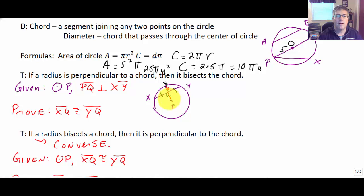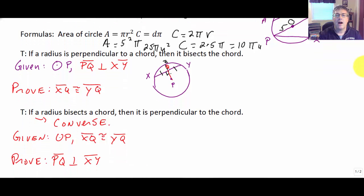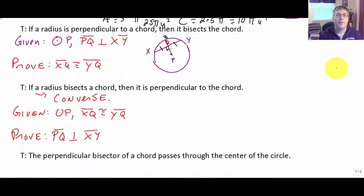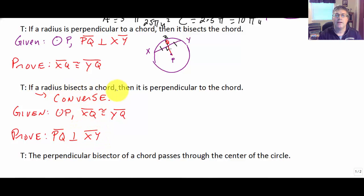This theorem is reversible — its converse is also true. If we're given a circle and XQ is congruent to YQ, and QP passes through the center, then PQ is perpendicular to XY. That is: if a radius bisects a chord, then it is perpendicular to the chord.